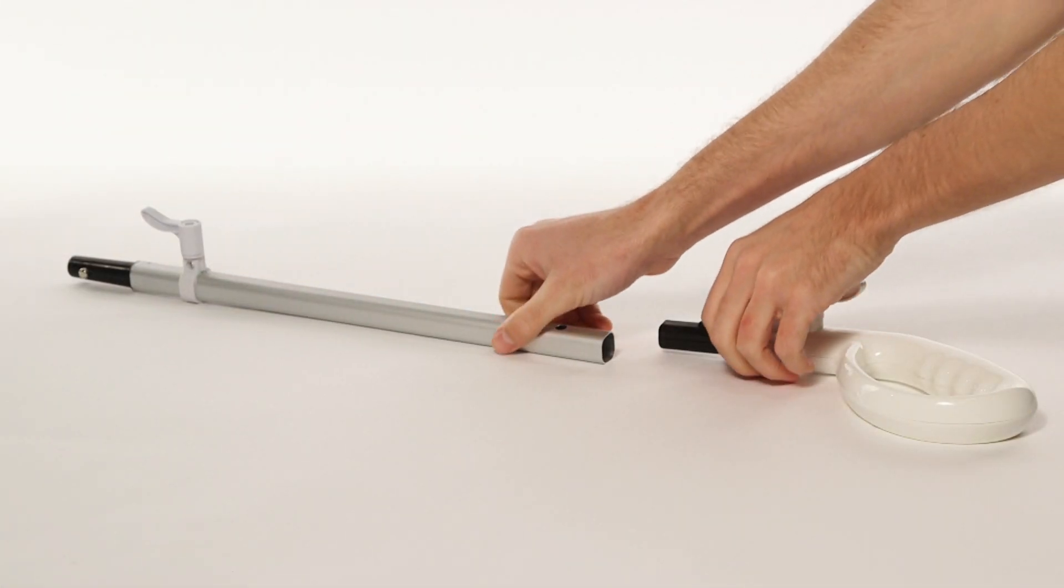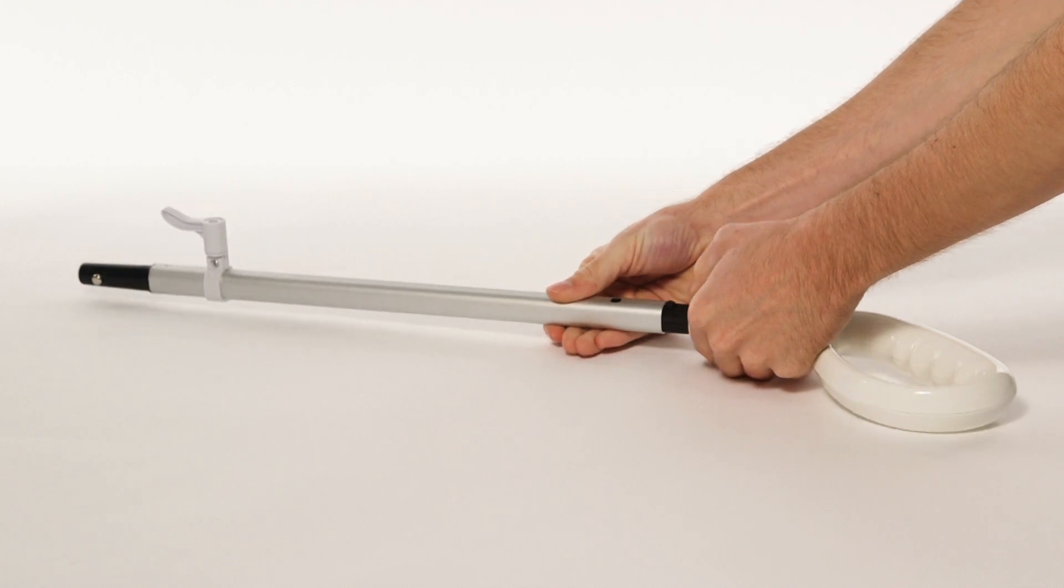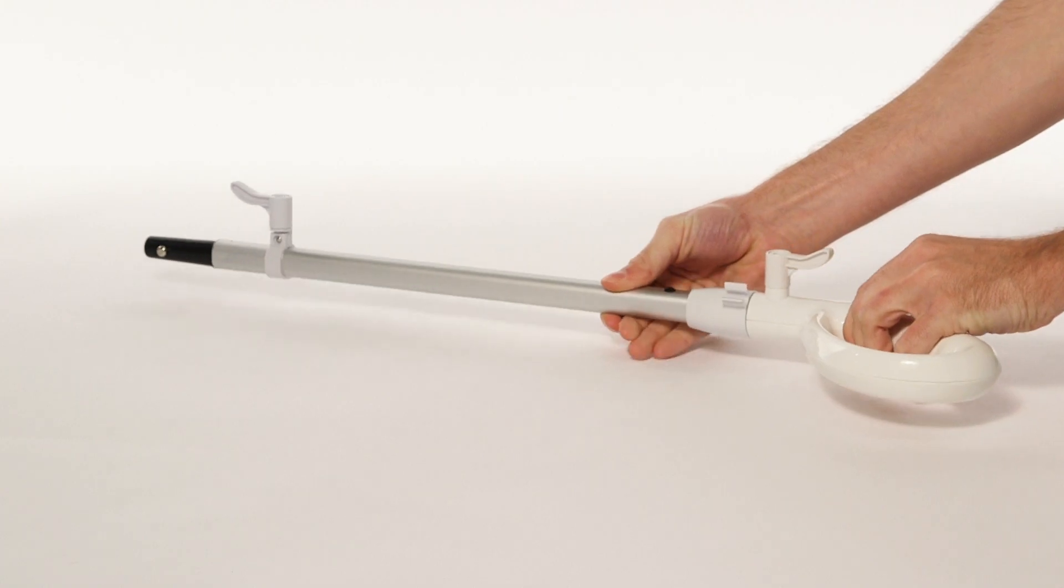Firstly, press the pop pin at the end of the handle and insert the extension tube until it clicks into place.